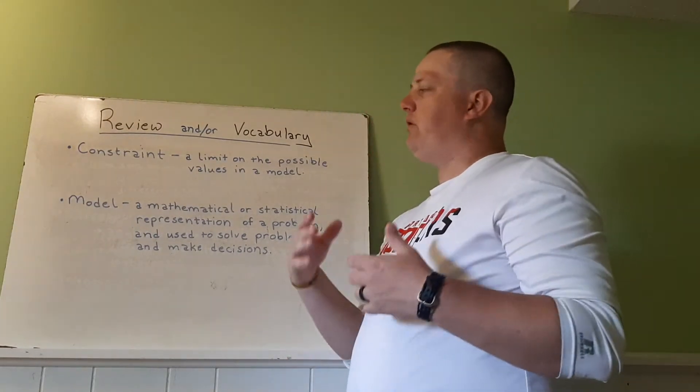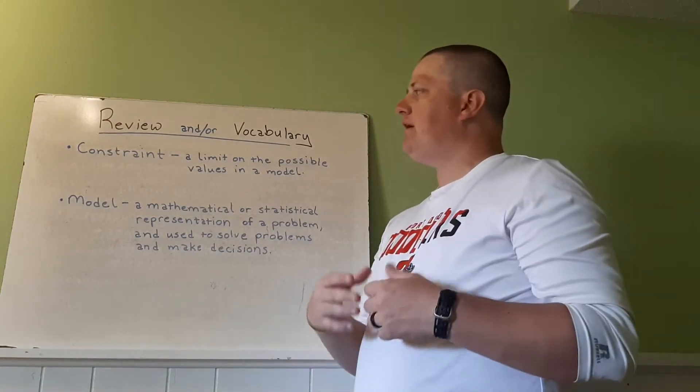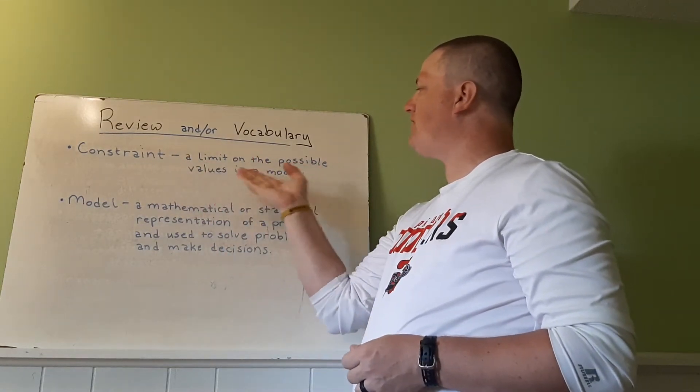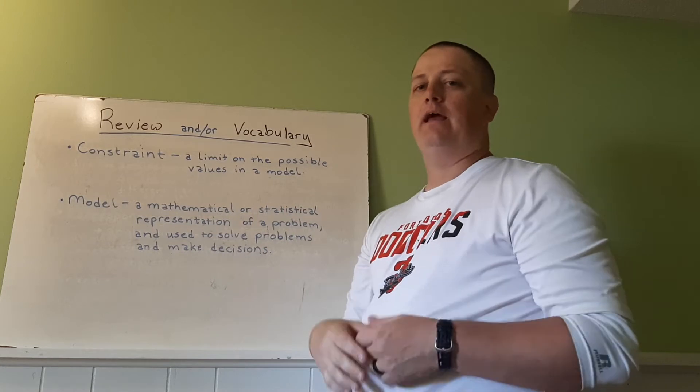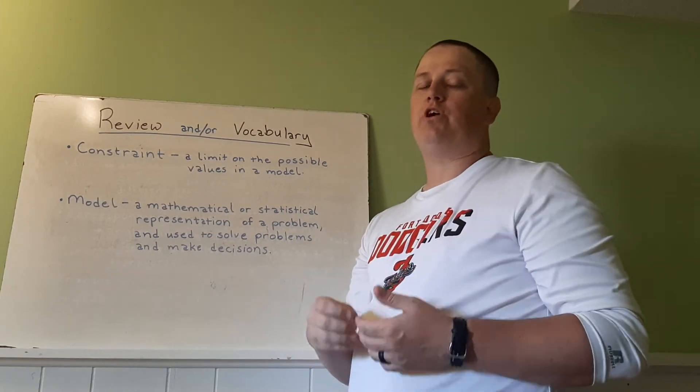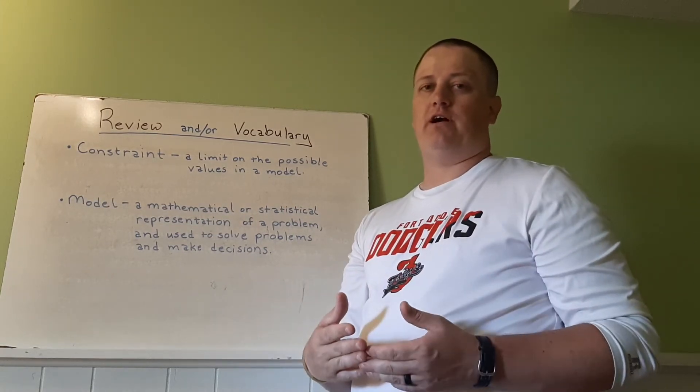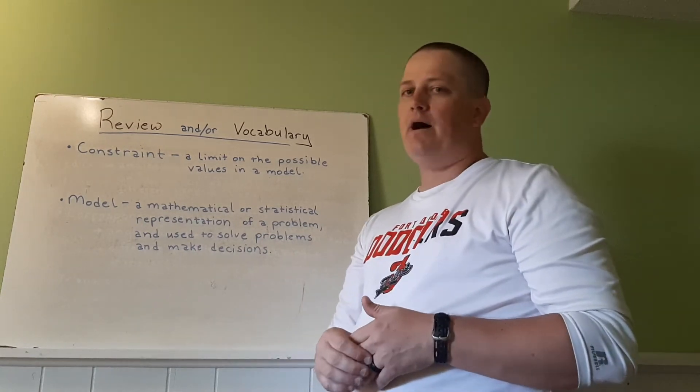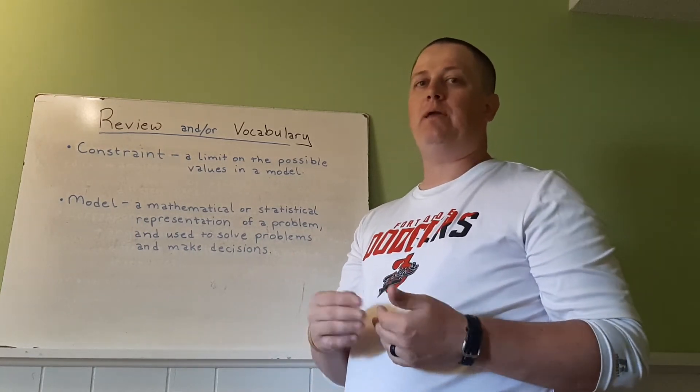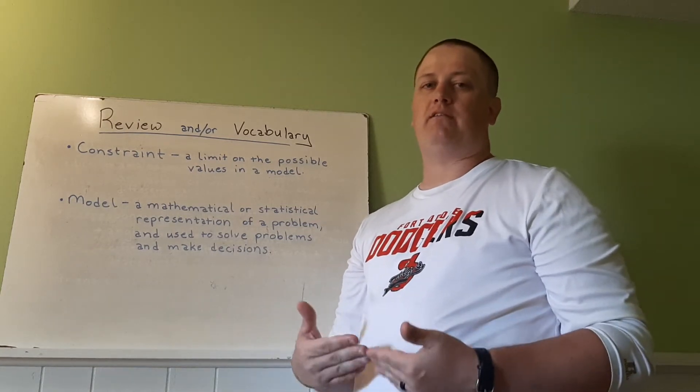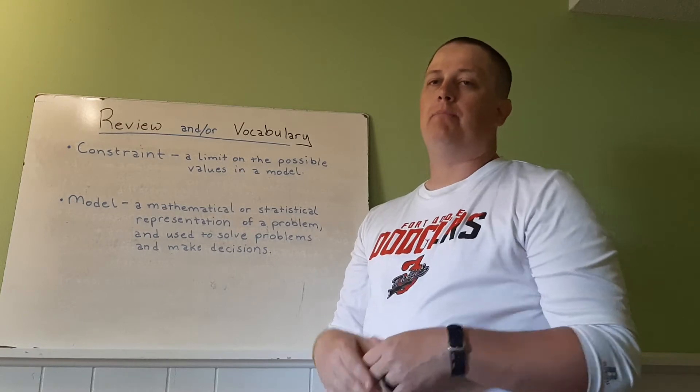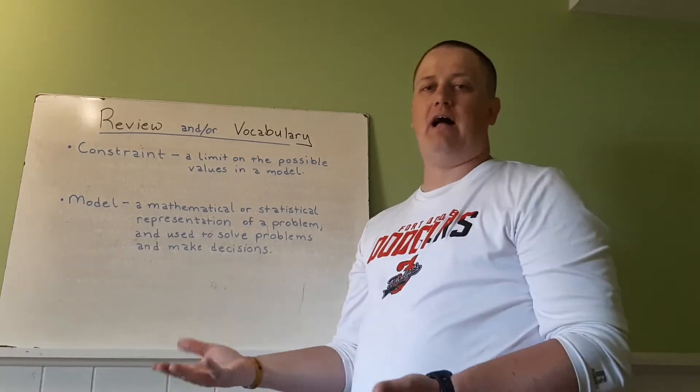All right. So our vocabulary, we have two new words that we're really going to focus on. Constraint is a limit on the possible values in a model. An example of this would be when we're talking about money, decimals are acceptable as long as they go out to two decimal places. But if we were talking about people, decimals wouldn't be acceptable in that. You wouldn't say that there's one and a half people, but you can say that there's one and a half dollars.